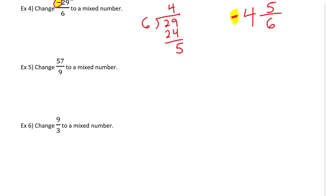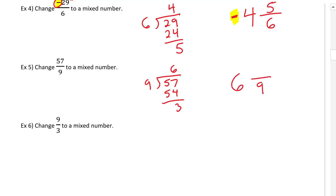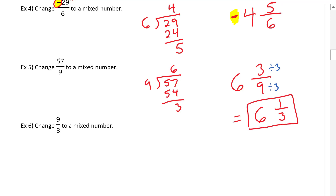Change 57 over nine into a mixed number. Nine divided into 57 — how many times does that go in? Six times. 54 is six times nine, and we have three remaining. The answer is six, the denominator is nine, remainder is three. Notice we can simplify the fractional part: take a three out of the numerator and three out of the denominator, so we get six and one-third. Don't forget to simplify your fractions.